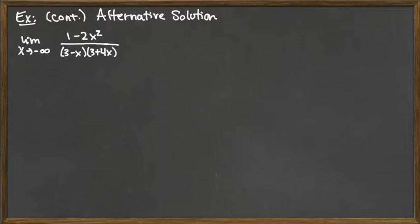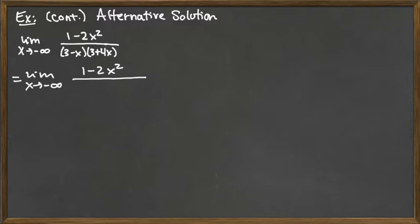This is the same limit copied over. The bottom is not multiplied out, but the first thing I'll do is multiply it out completely. So we have the limit as x goes to negative infinity. The top is 1 minus 2x squared. For the bottom: 3 times 3 is 9; the outer and inner terms give 12x minus 3x, which is 9x; and the last terms give negative x times 4x, which is negative 4x squared.